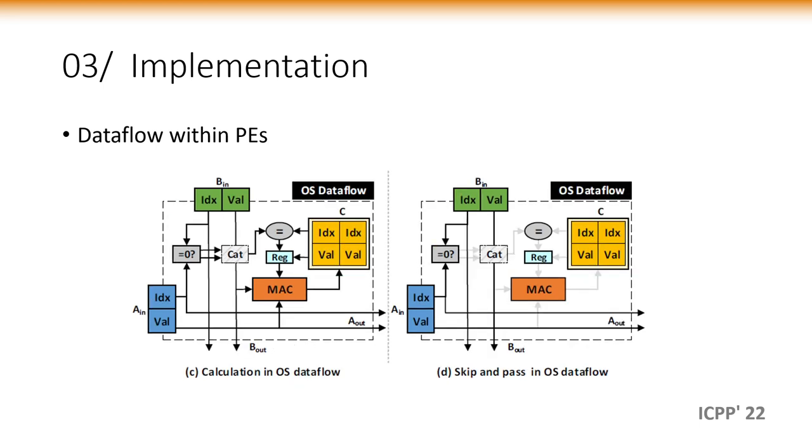In similarity, C is preloaded into the register file in the OS model, and A and B flow in and out horizontally and vertically. The left figure shows the data flow within a PE in the OS model, including the multiply, add, and delivery operations. And the right figure shows no computation operation will be performed when either A or B is zero.